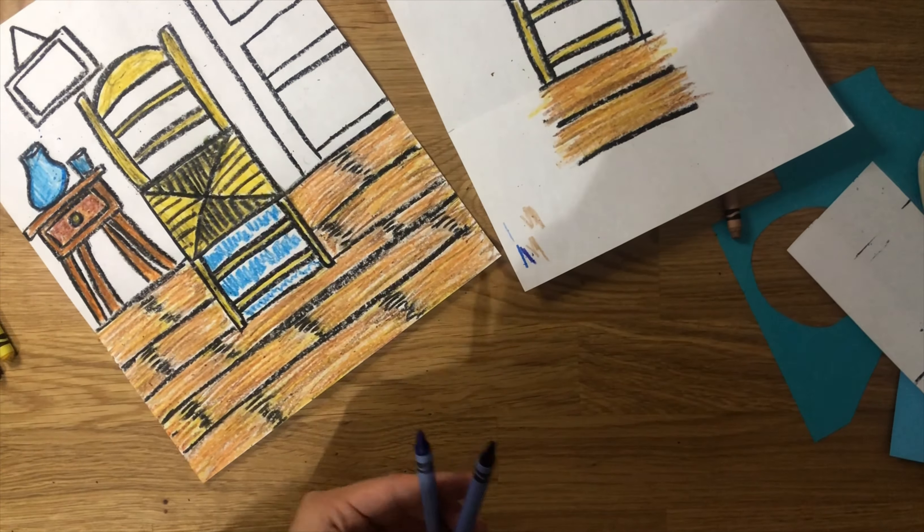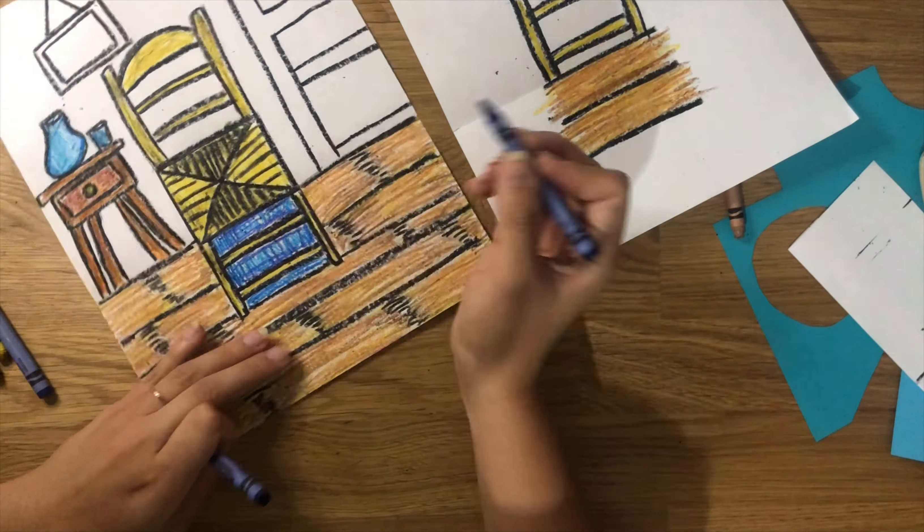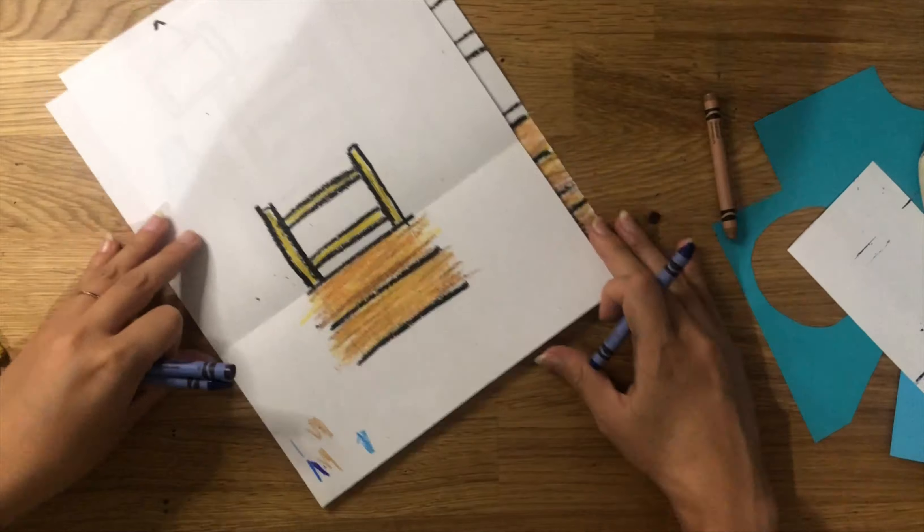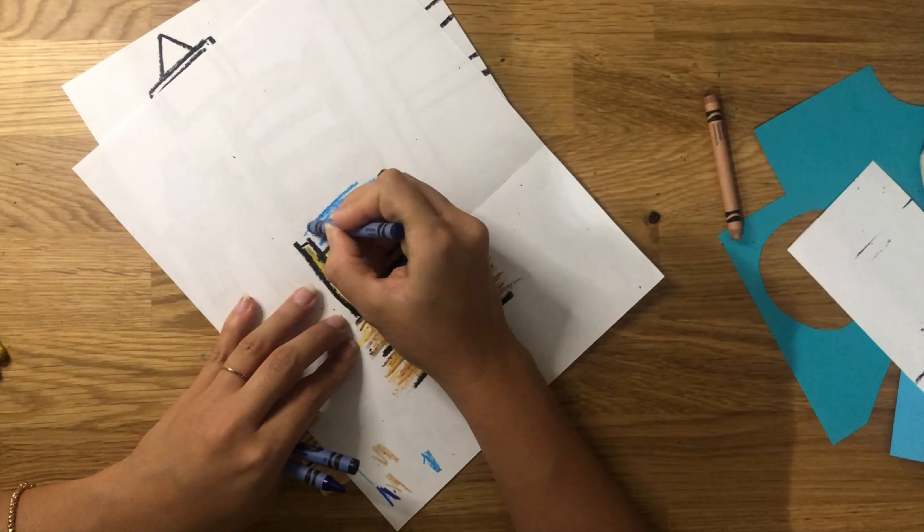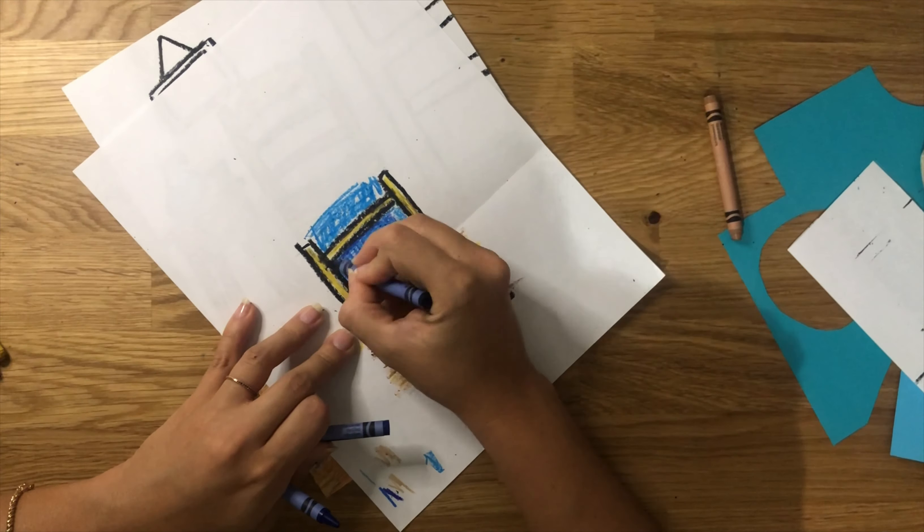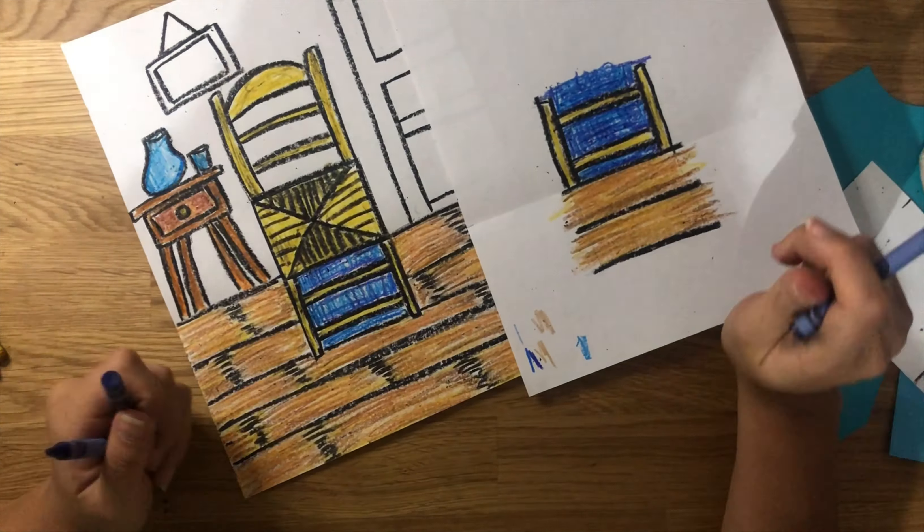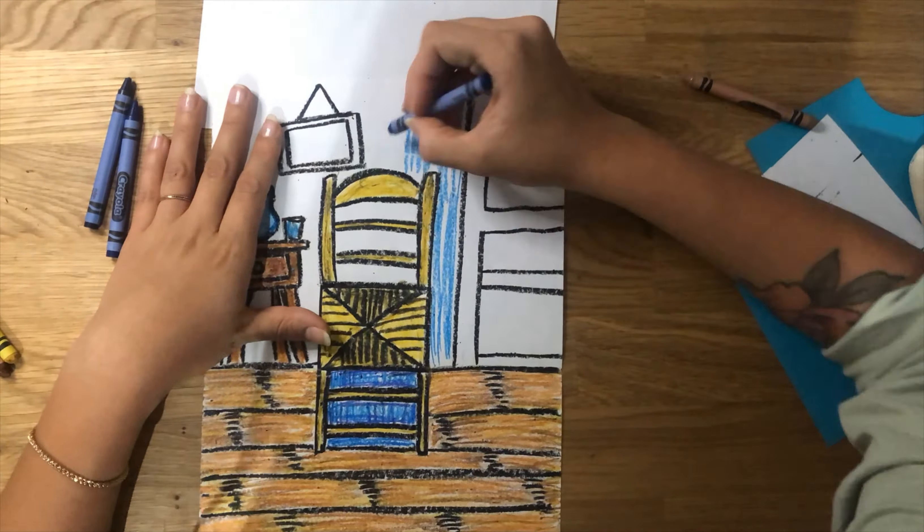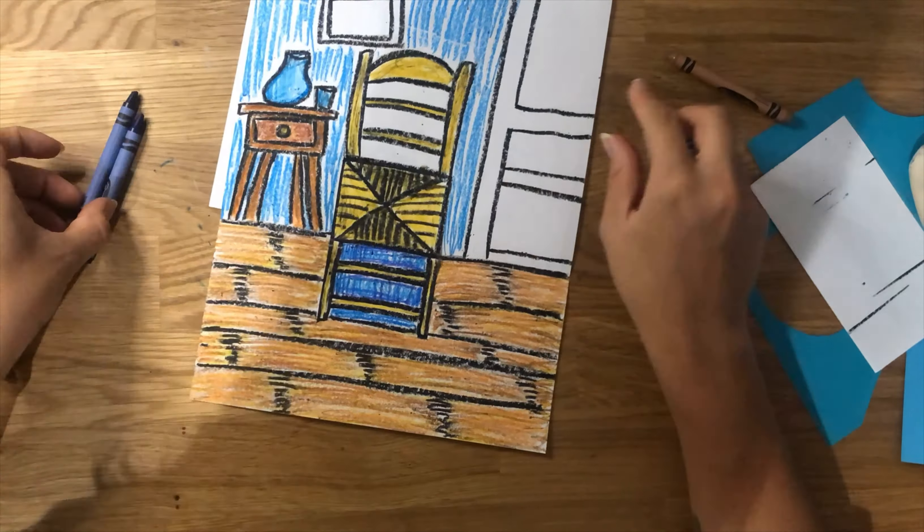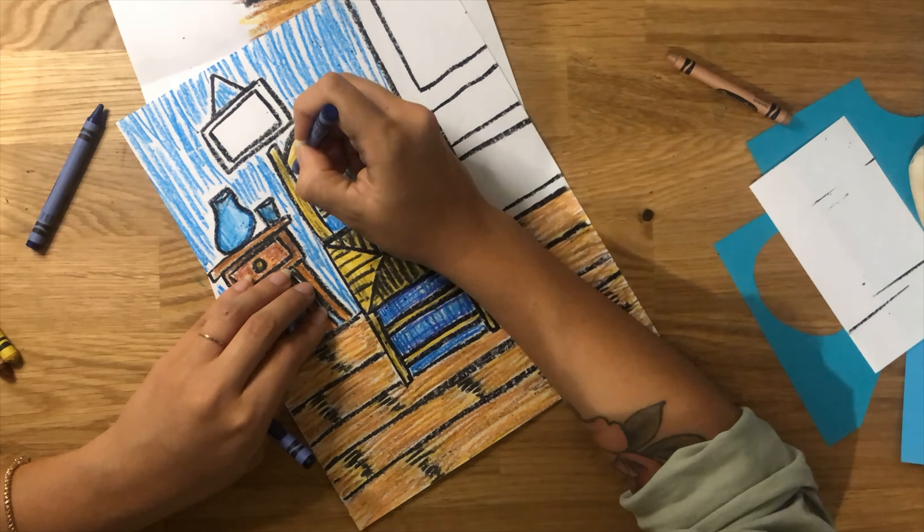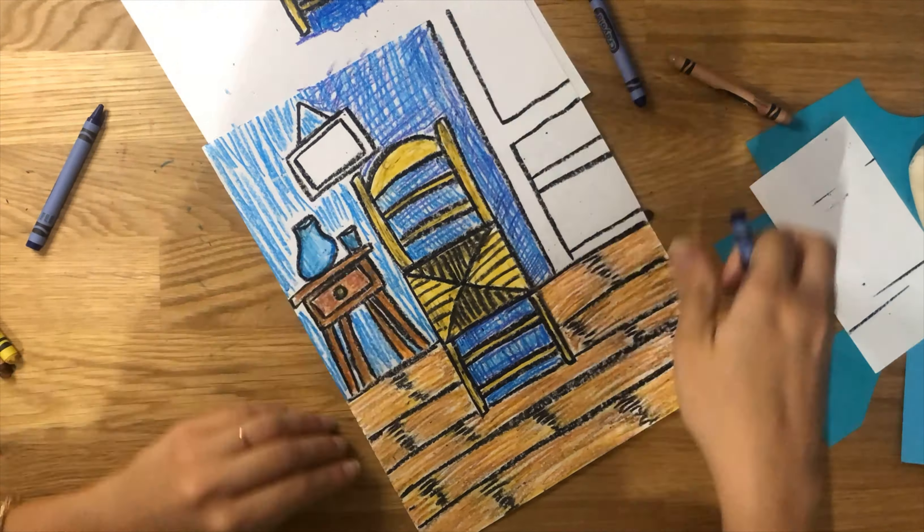We're going to use a similar technique for the wall of the bedroom. Start coloring again in a very scribble scrabble loose way, but your lines are going to follow the vertical direction this time. All they're going to do is go up and down, up and down, leaving some white space here and there. Then bring a darker blue and go the other direction. This is called a cross hatch technique. It's when we cross the lines that go from one direction and then we switch the direction all in the same place. This will add lots of texture to our painting.